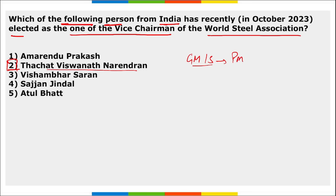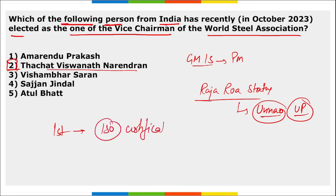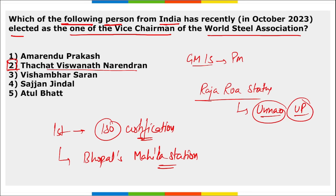A statue of freedom fighter Raja Rao was recently inaugurated in Unnao, UP, by the Chief Minister of UP — Yogi Adityanath. Bhopal's Mahila Police Station became the first station in India to receive ISO certification.